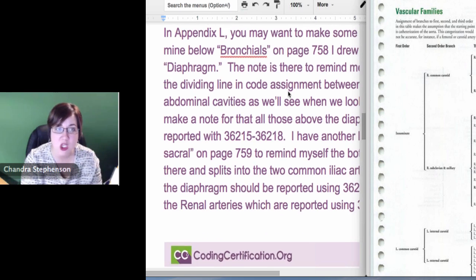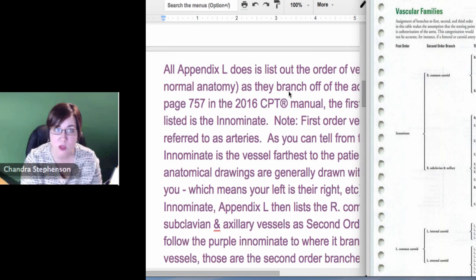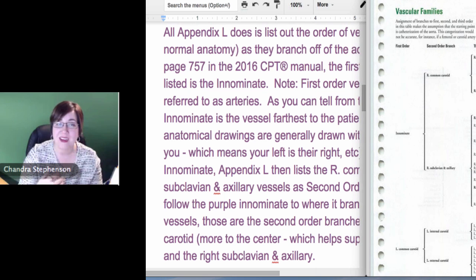Where it comes into play is 36215 through 36218, which are saying that you did a selective cath of one of these three off of the heart that basically feed the thoracic and brachiocephalic, pelvic arteries. So it feeds the brain, it feeds the arms, and it feeds the chest cavity. That's where that comes into play. And then you also see 36245 through 36248, which says you went into one of the arteries that feeds the abdominal cavity or the lower part of the body. That's the only time that you're really going to need to know how far did they go - first order, second order, third order.